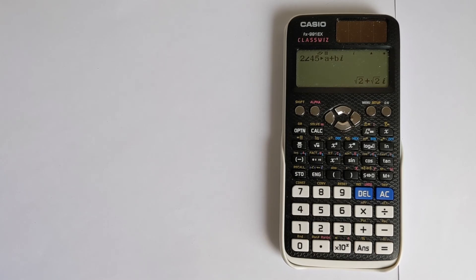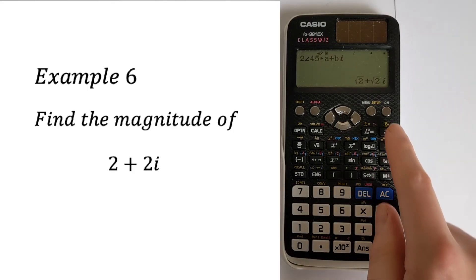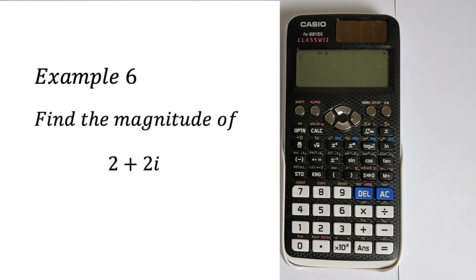The other thing you can do is find the magnitude or the absolute value of a complex number. Let's say we had something like 2 plus 2i and we wanted to find the absolute value.